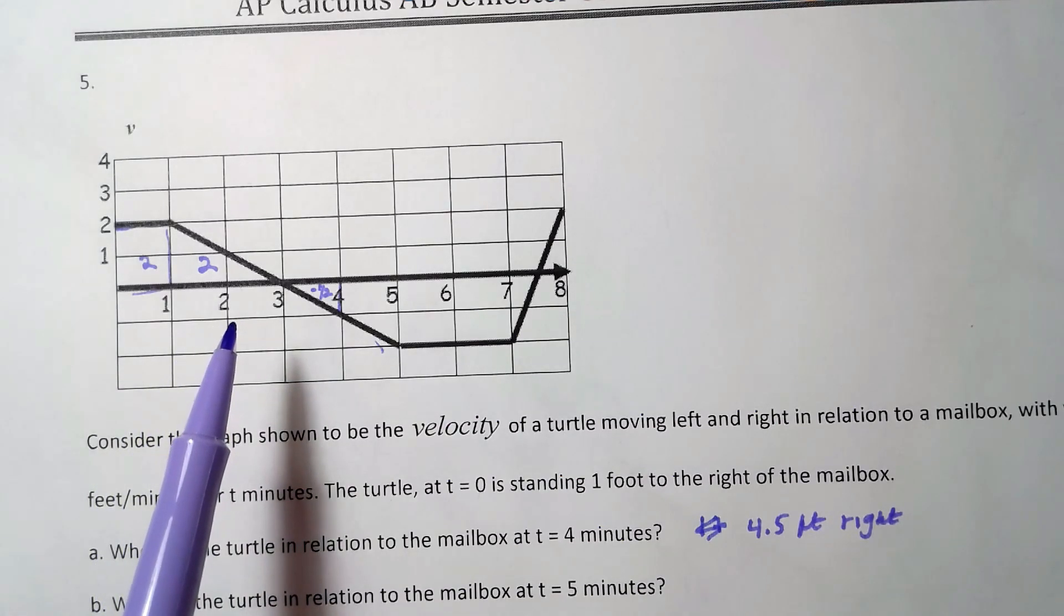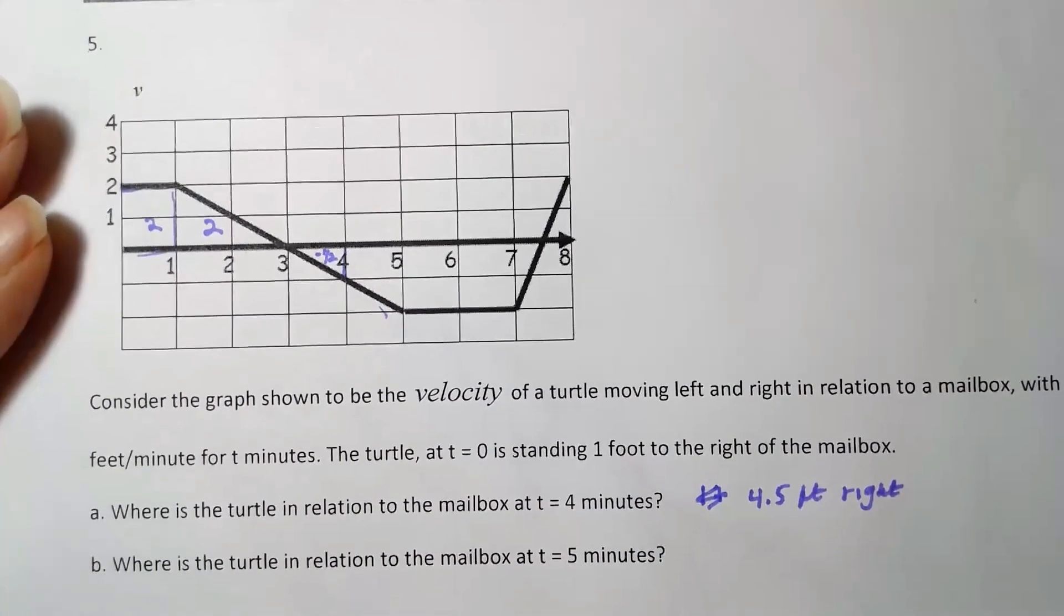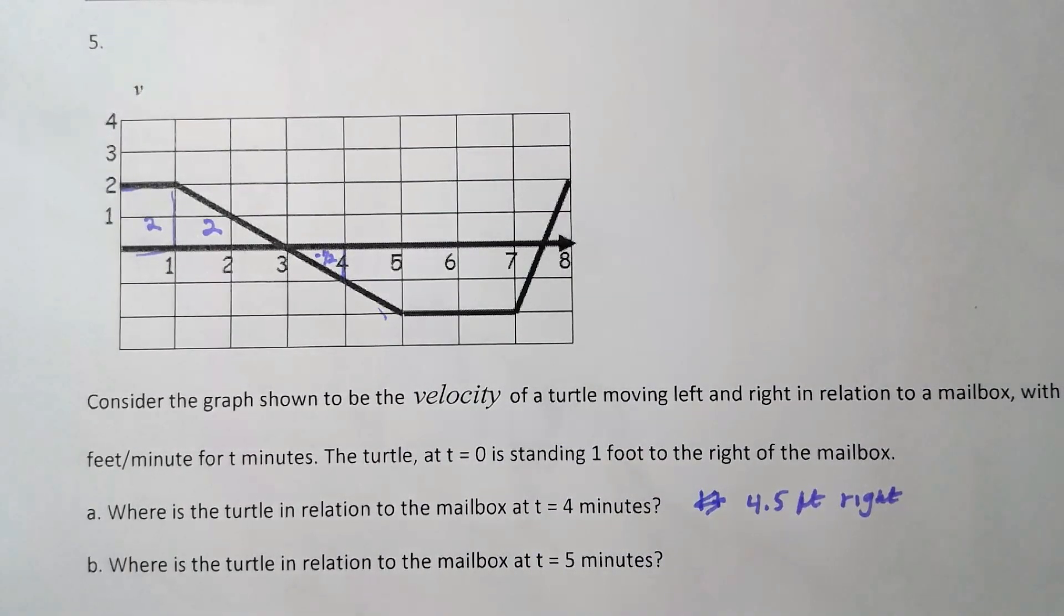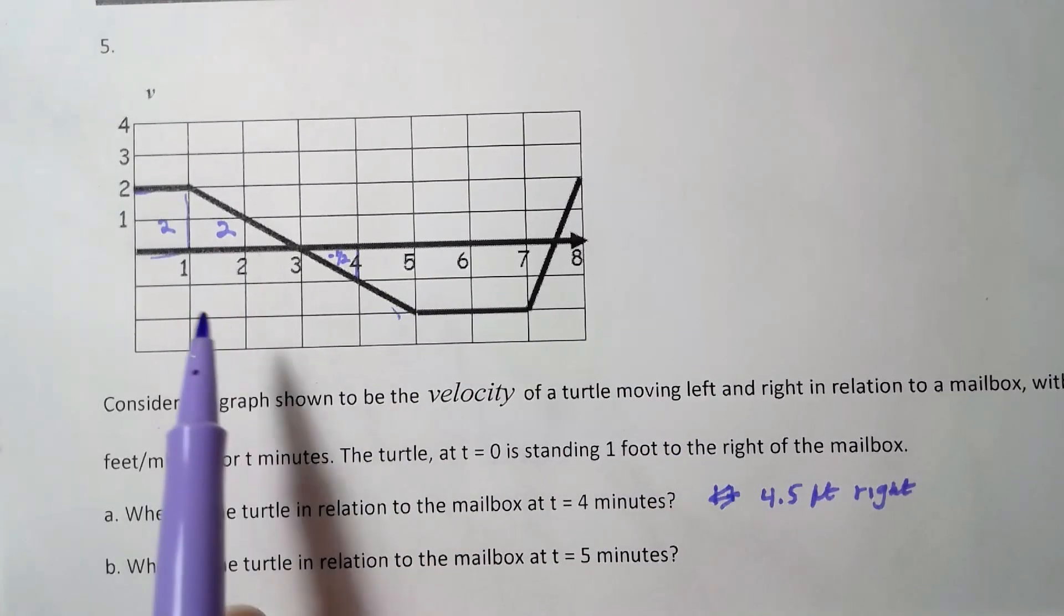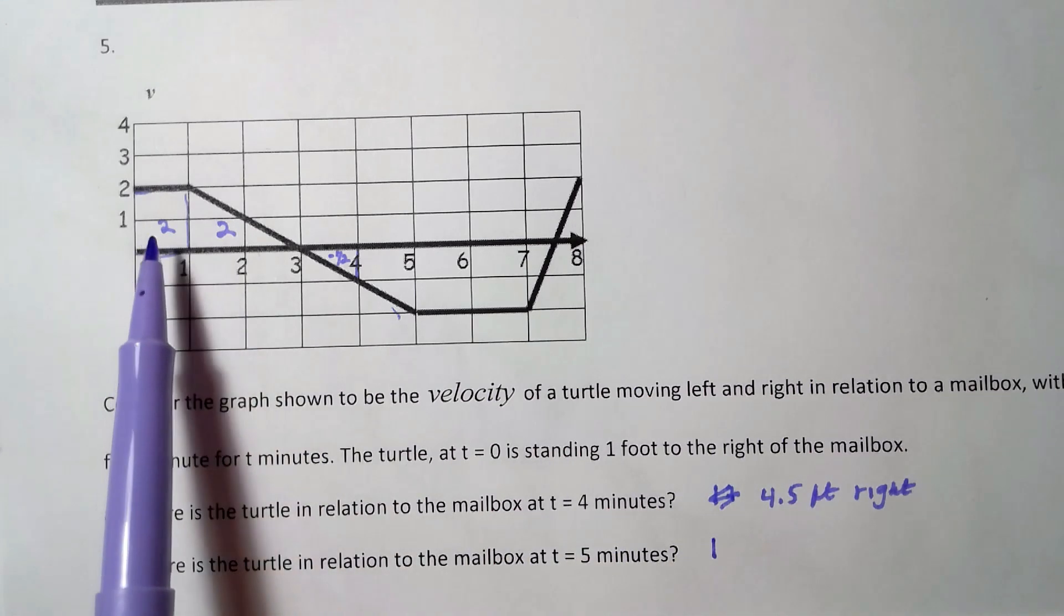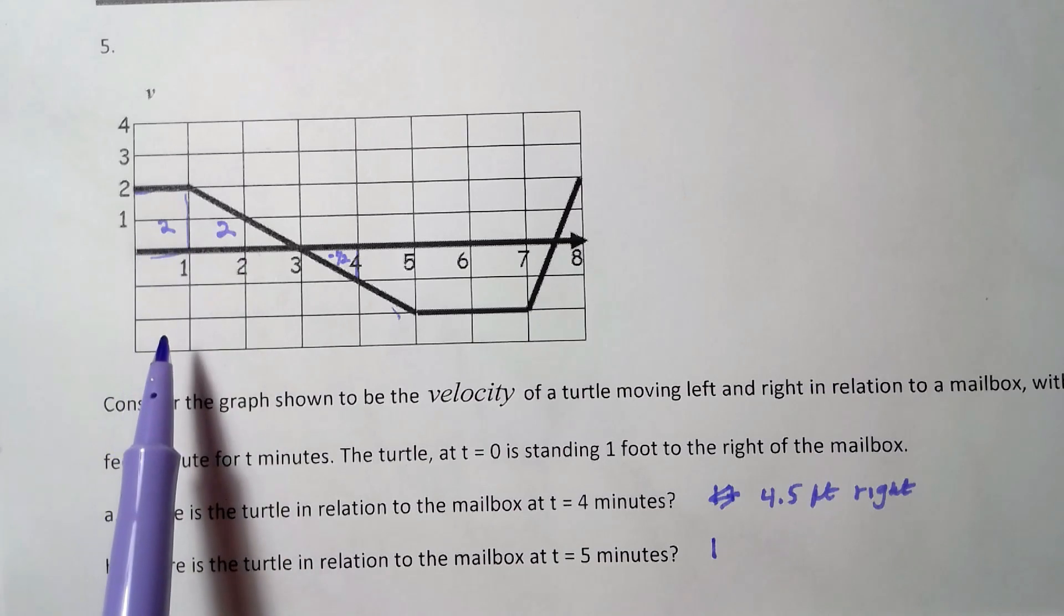Okay, where is the turtle in relation to the mailbox at t equals five minutes? Again, he's already one foot to the right of the mailbox at t equals zero, so I don't want to forget about that one foot. Anyway, we have four feet here.